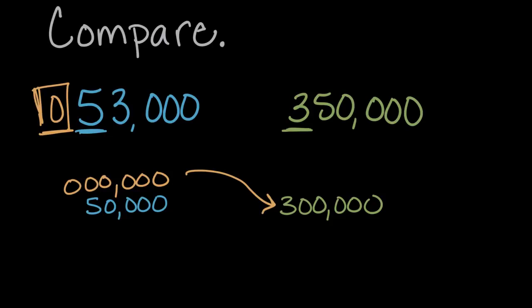So to read this, we'll say 53,000 is less than 350,000. And this symbol is less than, because the larger side is open to the bigger number. And the bigger number is the second number. So 53,000 is less than 350,000.